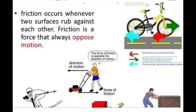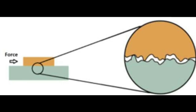Friction occurs whenever two surfaces rub against each other. Friction is a force that always opposes motion. If we look at the surface of any object which appears very smooth, and view that surface under a microscope, we will see irregularities or an uneven surface due to bumps. These bumps look like hills and valleys under the microscope. Whenever two smooth surfaces come into contact, these hill and valley-like surfaces form interlocking between each other, and this causes friction and opposes the motion.